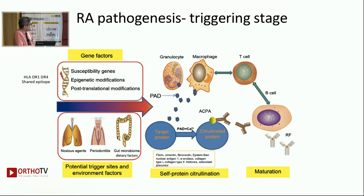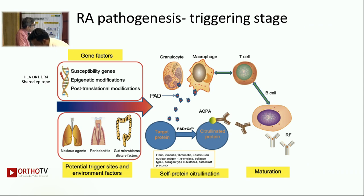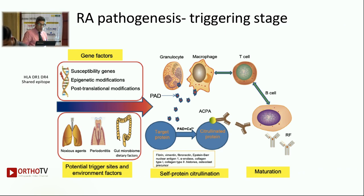What is citrullination? It is the changing of arginine molecules in target proteins into citrulline. This process is triggered by a combination of granulocytes and macrophages, which secrete the PAD enzyme, and this is what causes citrullination. You must have heard of ACPA or anti-CCP antibody — it is the antibody to citrullinated protein antigens. Because of this trigger, there is citrullination of proteins, and these citrullinated proteins are then recognized as foreign. This is what causes the breach of immunological tolerance, and this is where the entire rheumatoid arthritis autoimmunity starts.